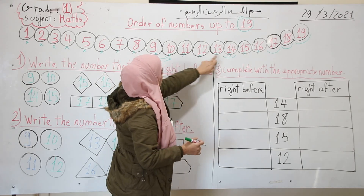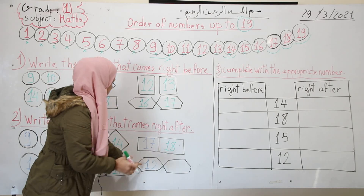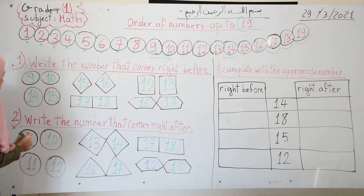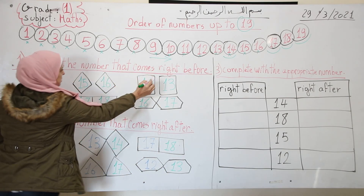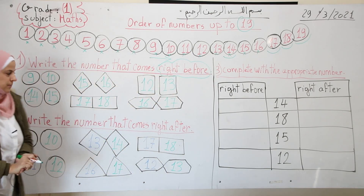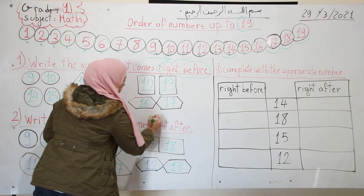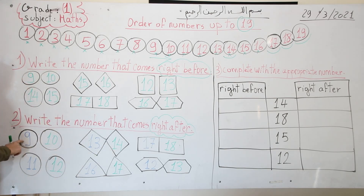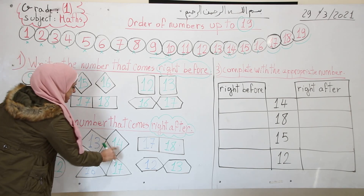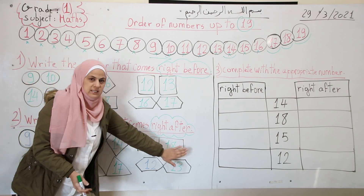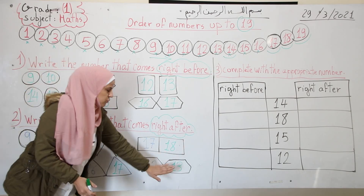After 12: 13 comes right after 12, so I write 13. Let me remind you: right before is the number that comes before; right after is the number that comes after. To review: after 9 is 10, after 11 is 12, after 13 is 14, after 16 is 17, after 17 is 18, after 12 is 13.